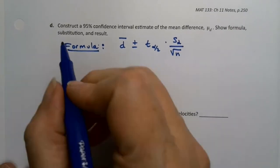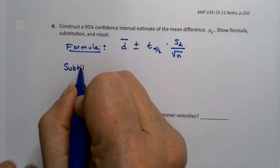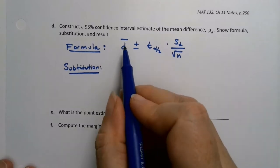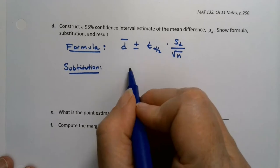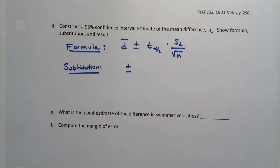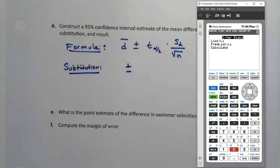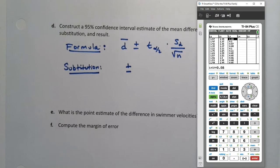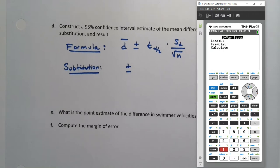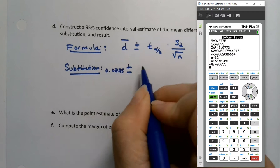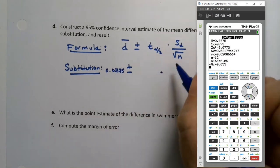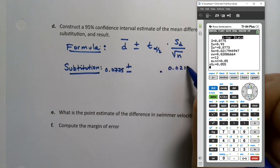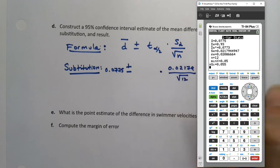We need to find d̄ and s_d in order to do the substitution step, as well as t_α/2. I know n is 12 already. To find d̄ and s_d, I want to run one variable statistics on those differences. I can do that with the calculator: stat, edit, I found those differences in L3. Then stat, calculate, number one, one variable stat on second three, L3. There's d̄ right there at the top, 0.0775. The s is the standard deviation, 0.02179, divided by the square root of n, which was 12.